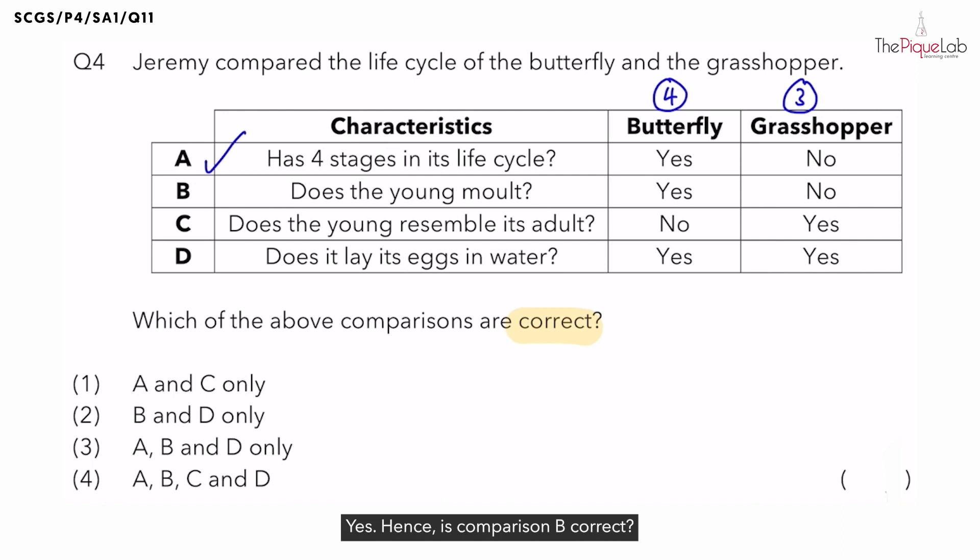Hence, is comparison B correct? No. This is so as the grasshopper should undergo molting as well.